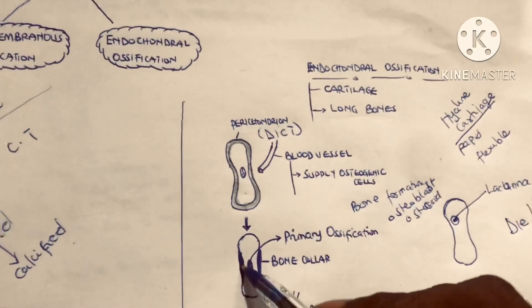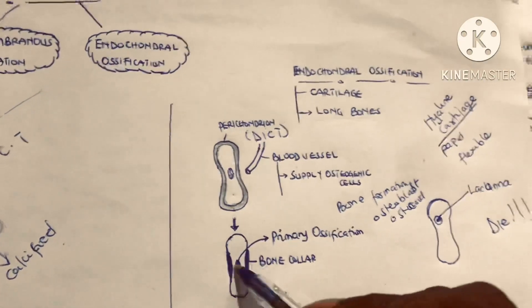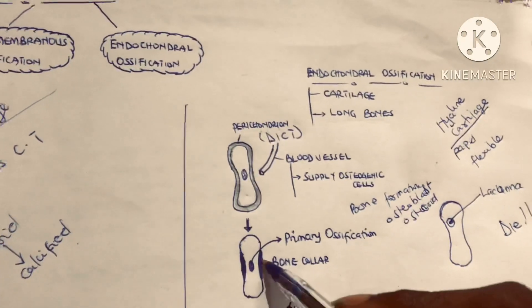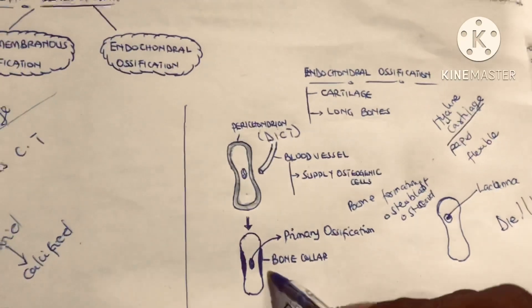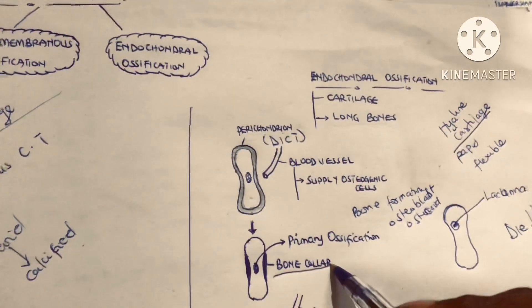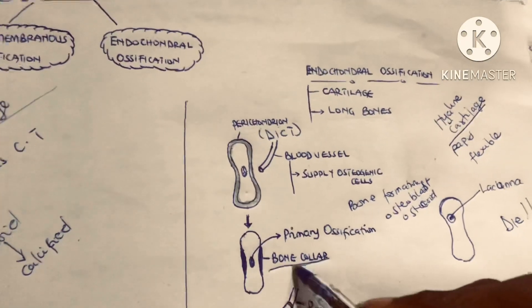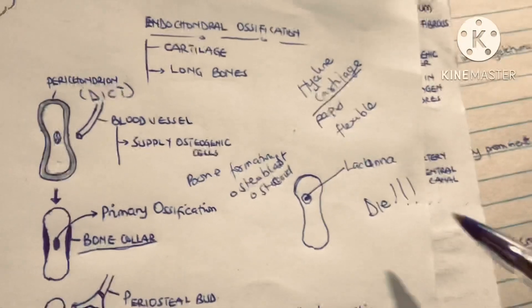This leads to the formation of bone tissue at the perichondral area. The perichondral area will become bone and form what is called the bone collar.